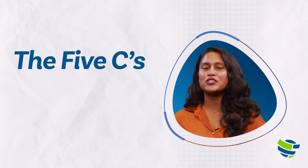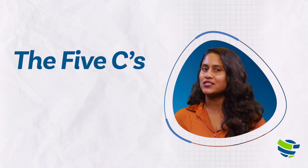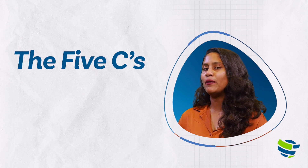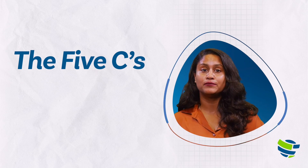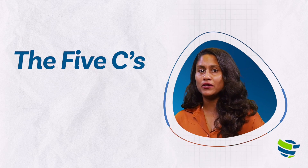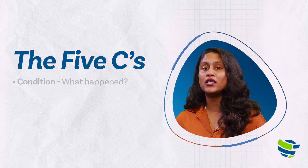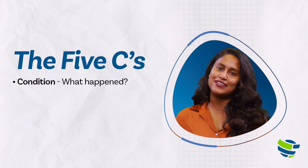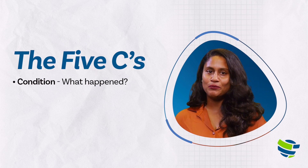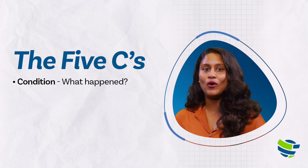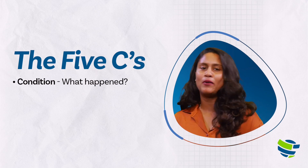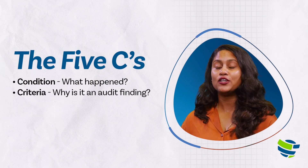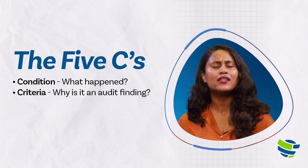In Getting Started With Reporting, we told you about the five C's — let's explore them a bit more, including why they are an important part of an audit finding. The first two C's typically go together. When you're writing up an issue, you want to explain the condition, which is in simple terms what happened. An example could be that system changes were not approved by management.